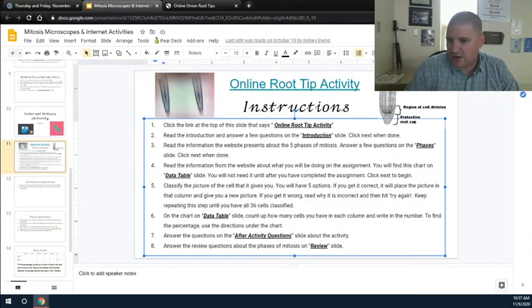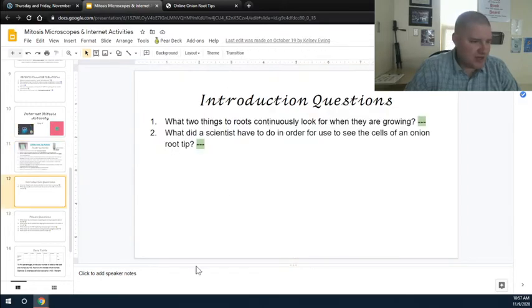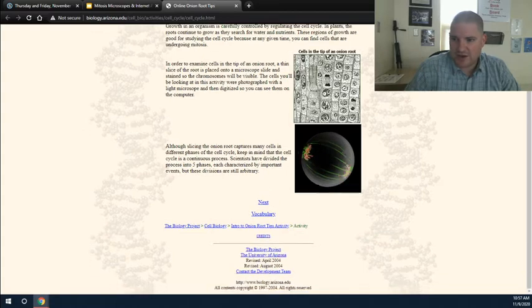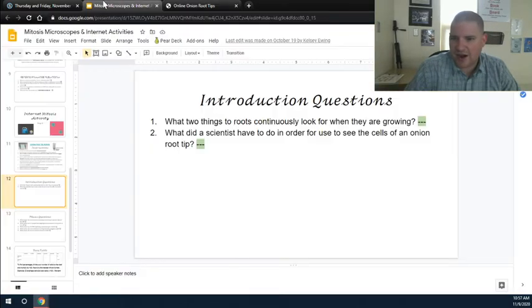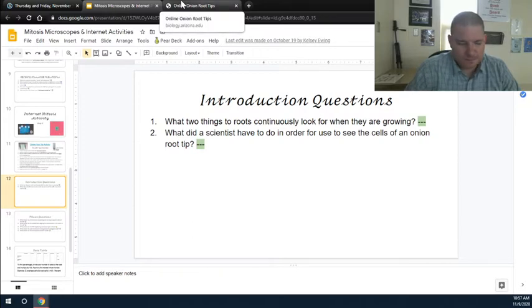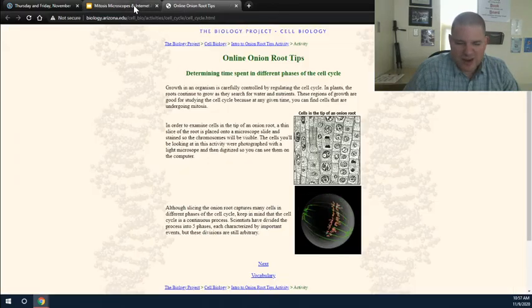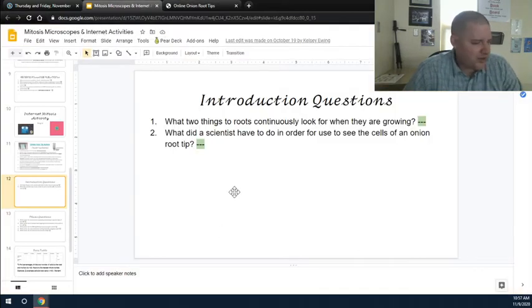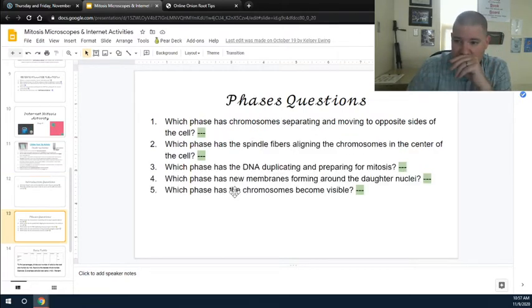You're going to read the introduction and answer a few questions on the introduction slide. So here's the introduction questions. Here is the introduction. You're going to read through these three paragraphs, and there's two questions for you to answer. Basically, why we're looking at a root instead of something else, and what do we have to do to get these cells to be prepped this way. So kind of a little bit of almost like a pre-lab sort of with it, but there's two questions to answer up there. The first one has two things, so make sure that you're answering two things about it.